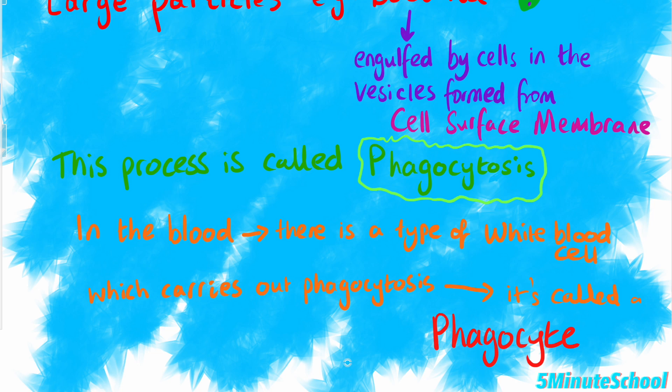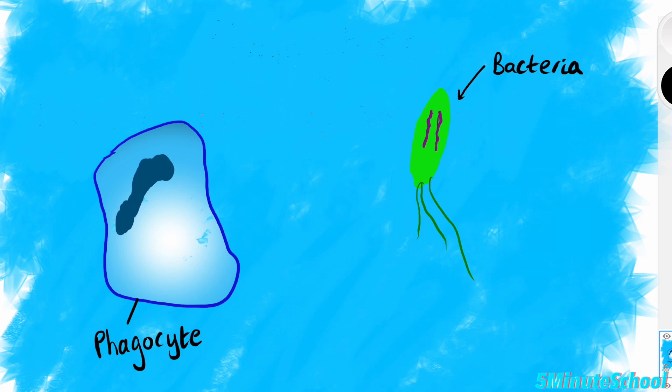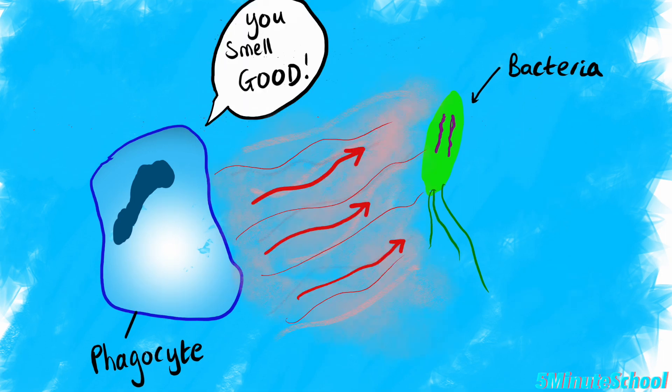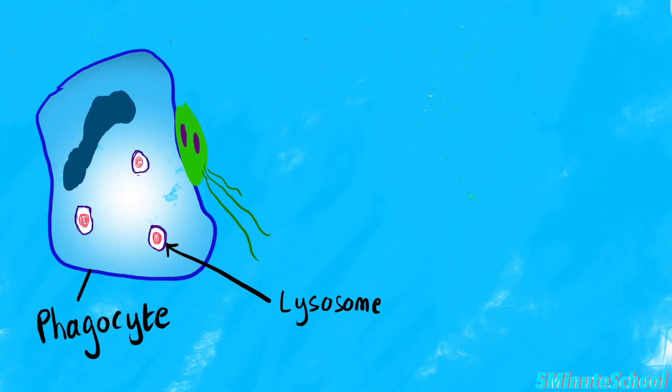Here's how the process works. Chemical products of pathogens, or dead, damaged, or abnormal cells, act as attractants, causing phagocytes to move towards the pathogen — for example, a bacterium. Phagocytes have several receptors on their cell surface membrane that recognise and attach to the chemicals on the surface of the pathogen.